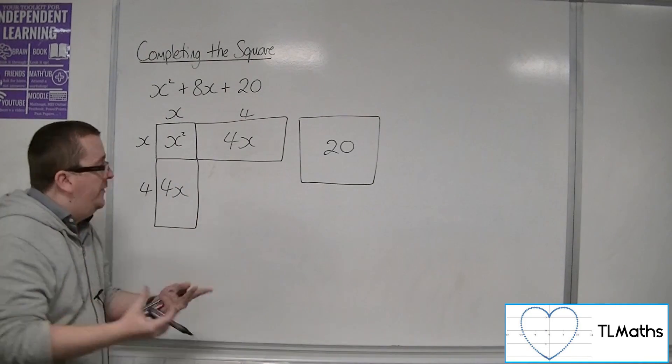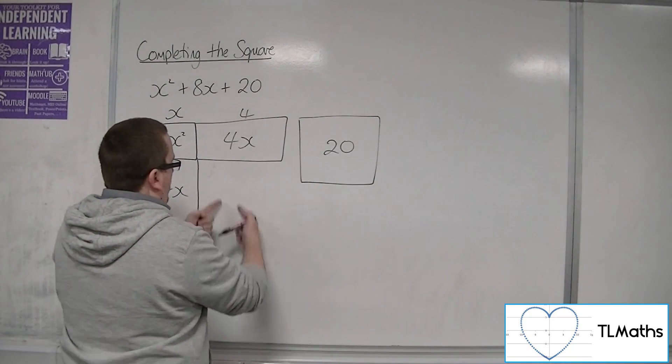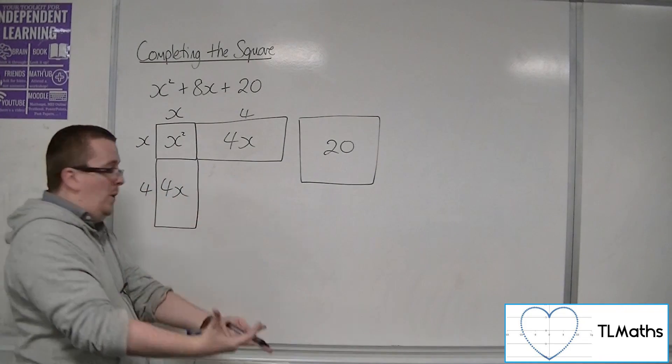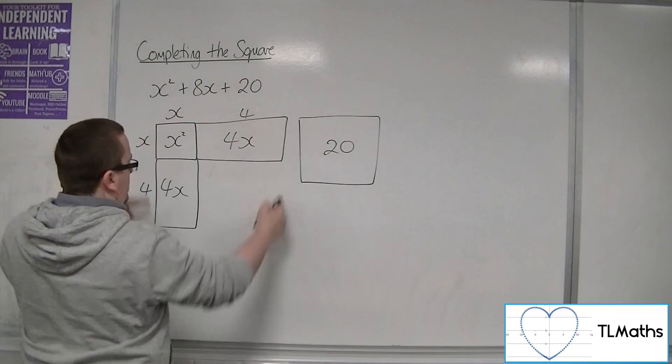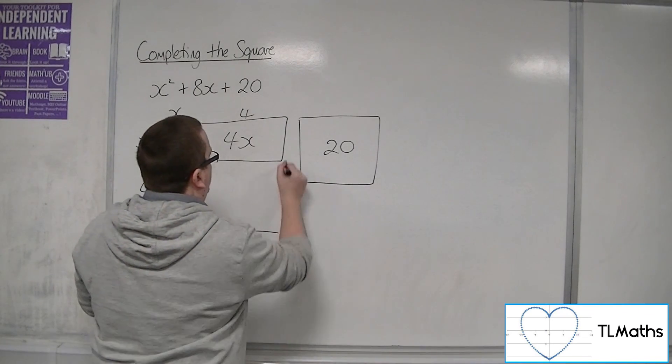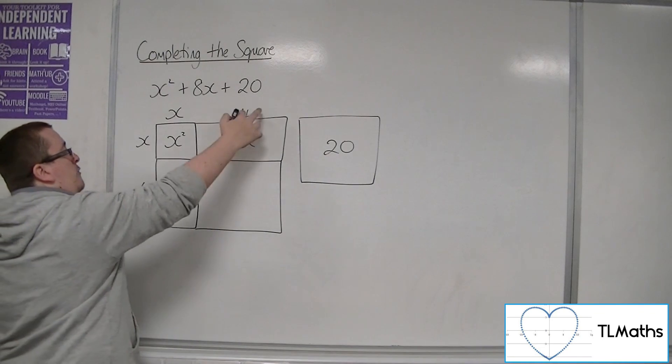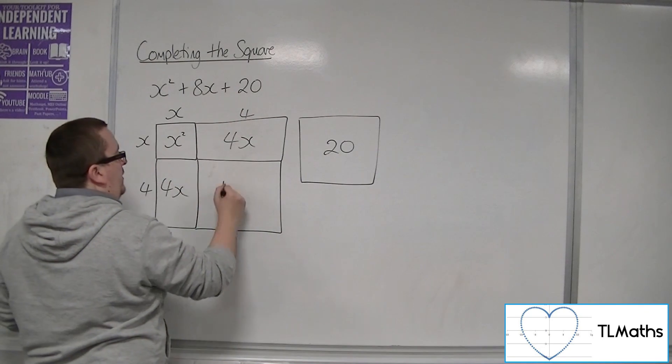And then what I've got is this big gap down here, and this is the idea of completing the square. This is what we're actually doing. We're completing the square diagram. So this square has area 4 times 4, so that's 16.